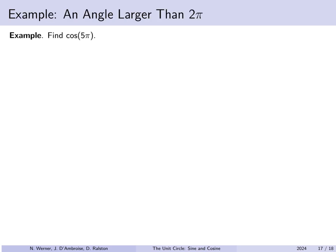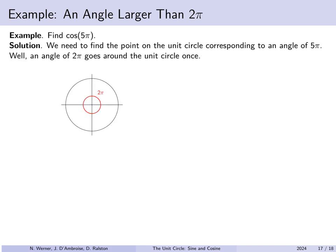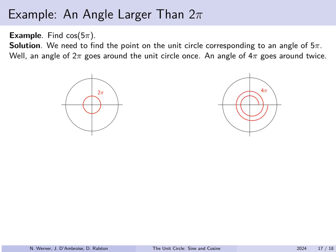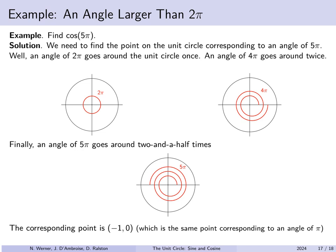Another example: what's the cosine of 5 pi? This is bigger than 2 pi — more than one complete rotation. We need to find the coterminal angle within 0 to 2 pi. Now 2 pi goes around once, so 4 pi goes around twice. And 5 pi has 1 pi left over, so it goes around 2 and a half times. The corresponding point is straight left on the circle, which is (negative 1, 0). This is coterminal to the angle of pi. Therefore the cosine of 5 pi is the x-coordinate of this point, which is negative 1.